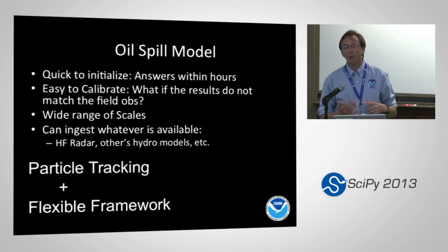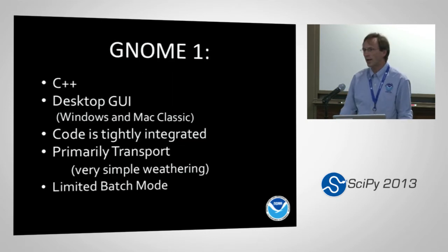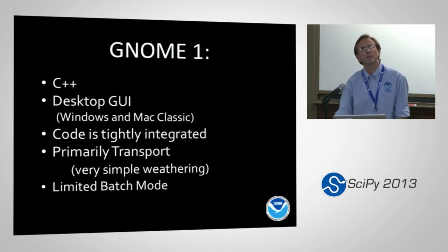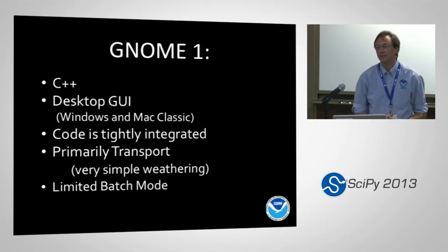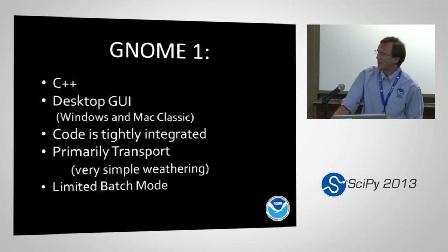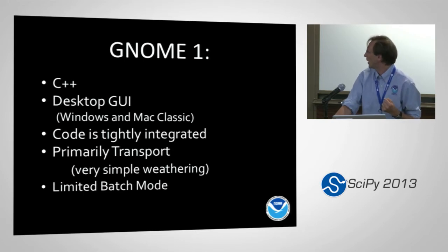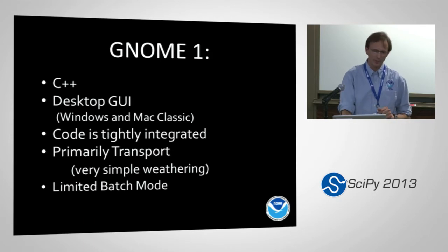All this leads to using particle tracking — it's a really good way to deal with multiple scales — and we need a really flexible framework. GNOME 1 has been our bread and butter tool for about 16 years. It's written in C++ as a desktop graphical user interface, and the code between the graphical interface and the computational code is all tightly intertwined. It primarily covers just the transport side of the equation; we're not really modeling oil weathering in that tool, and it has a limited batch processing mode with no full scripting language.